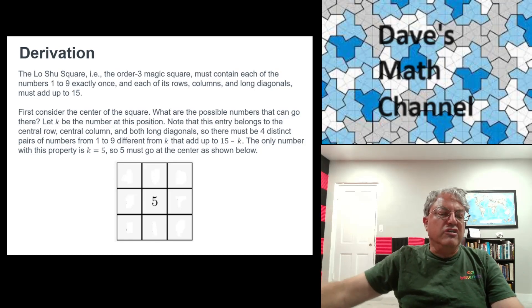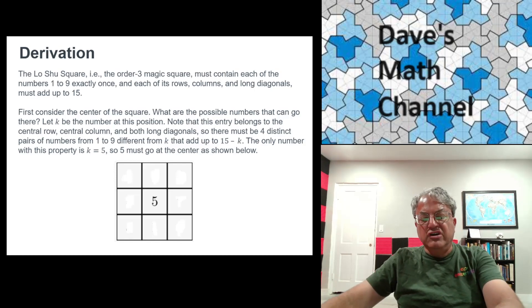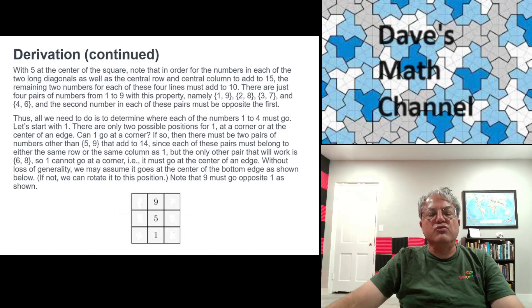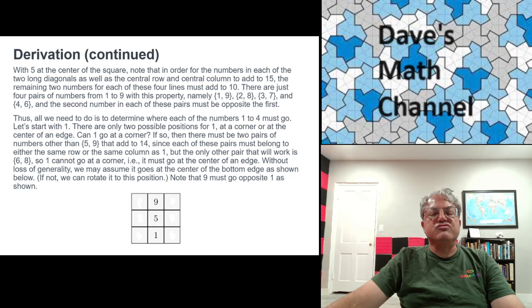So the 5 has to go in the middle because the other positions won't allow all four combinations. So we just proved that 5 has to go in the middle. Let's look at 1 next. Where can 1 go? Well, up to rotations and reflections, there's only two possibilities. One can either go in a corner or it can go in the center of a row. And let's try in a corner first.